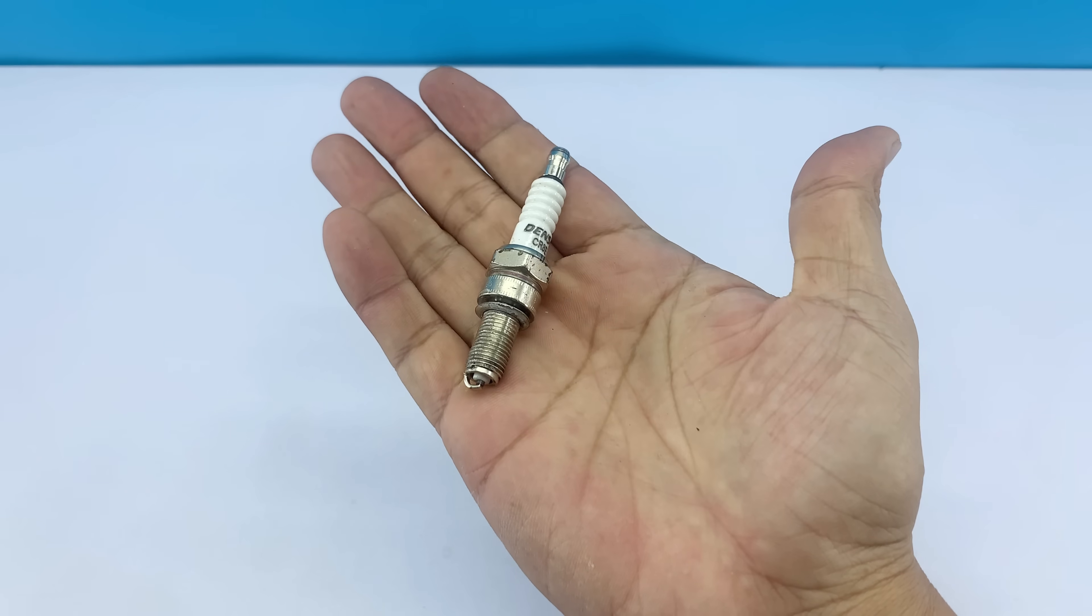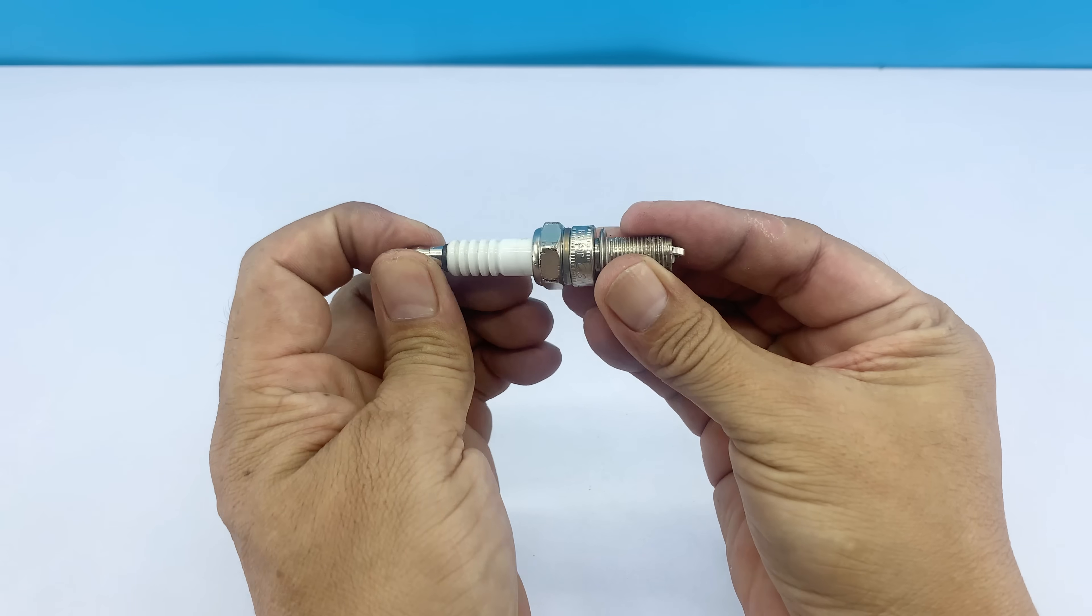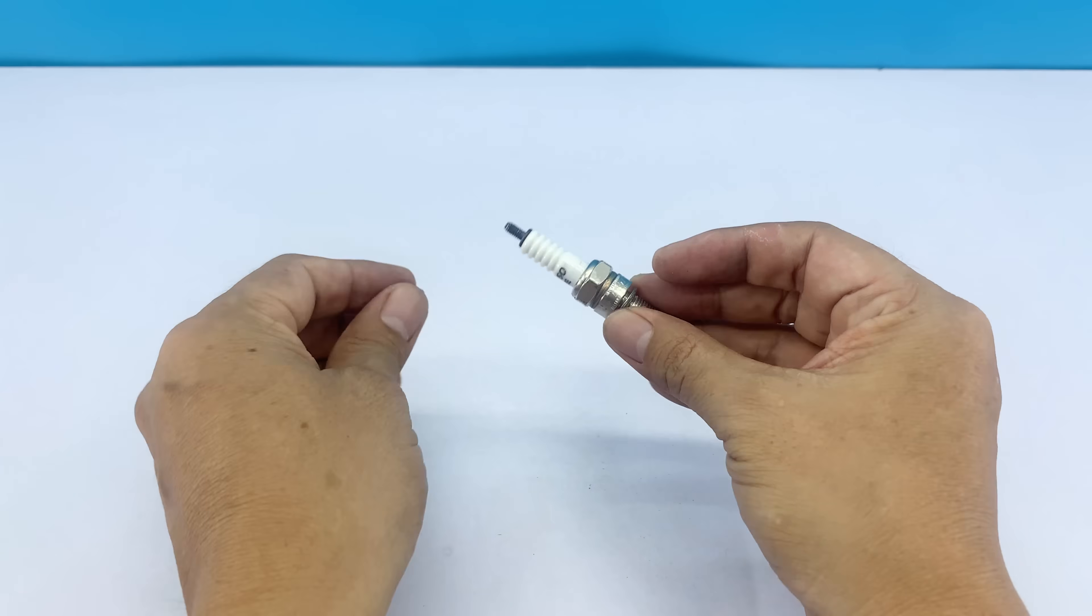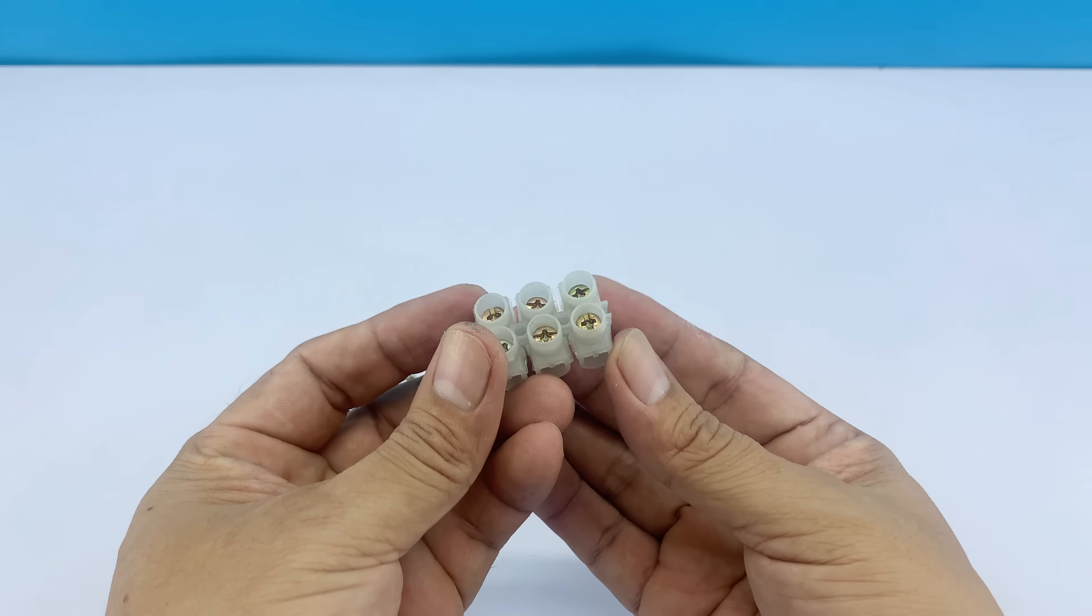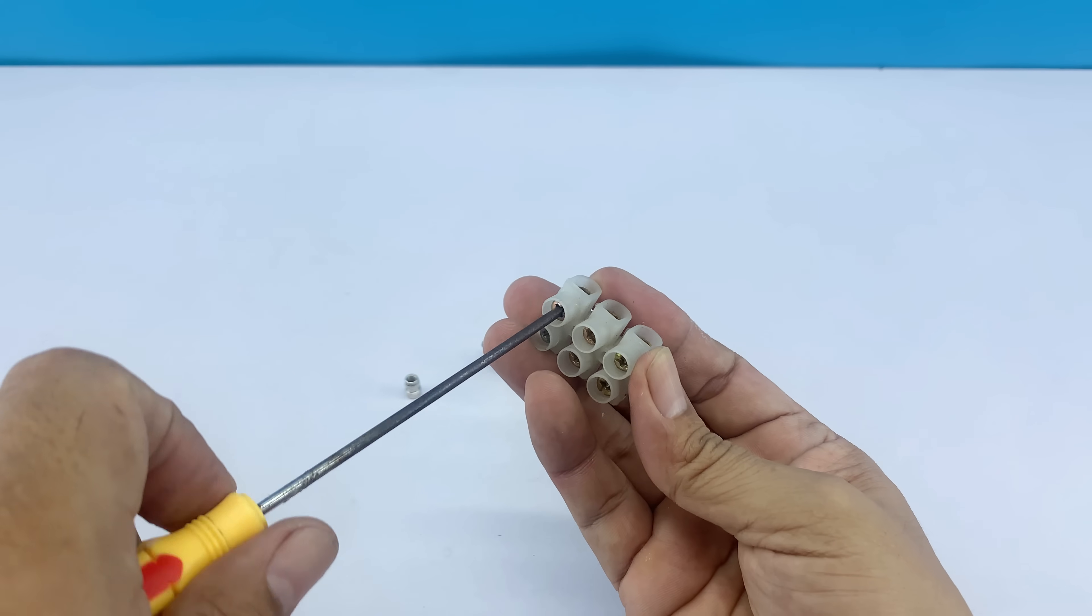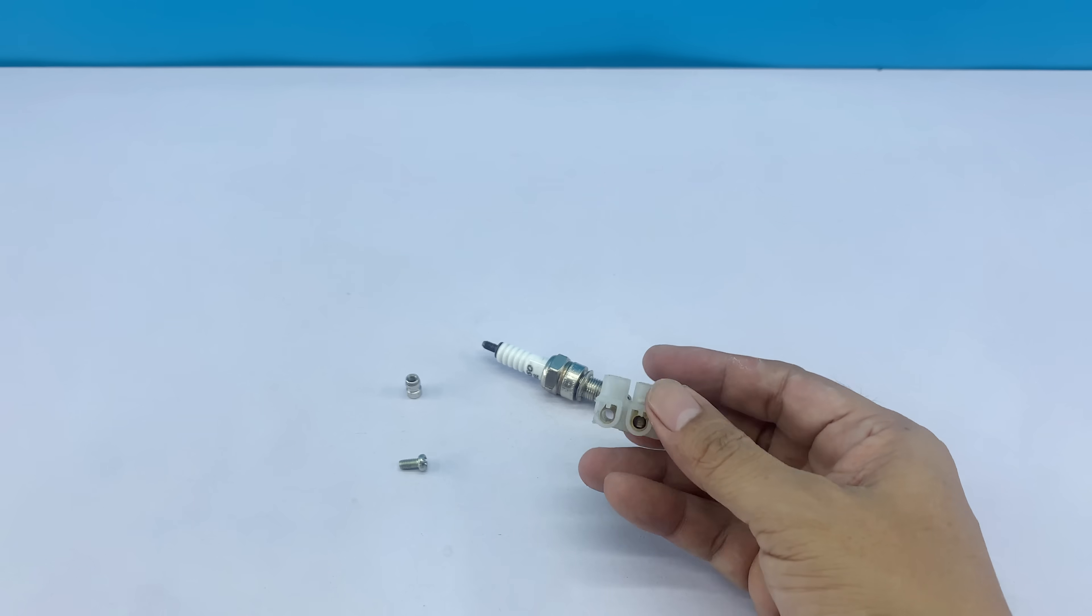In my hand is a regular spark plug. First, we remove the spark plug terminal and set it aside. The next step, I'll prepare two screws and a single port electrical connector, taken from an electrical terminal block.